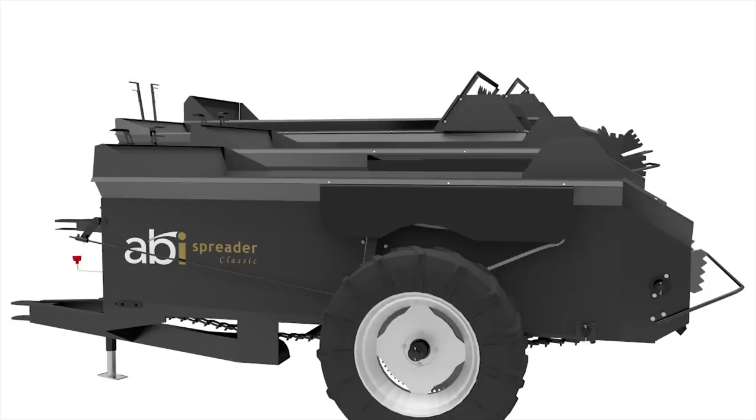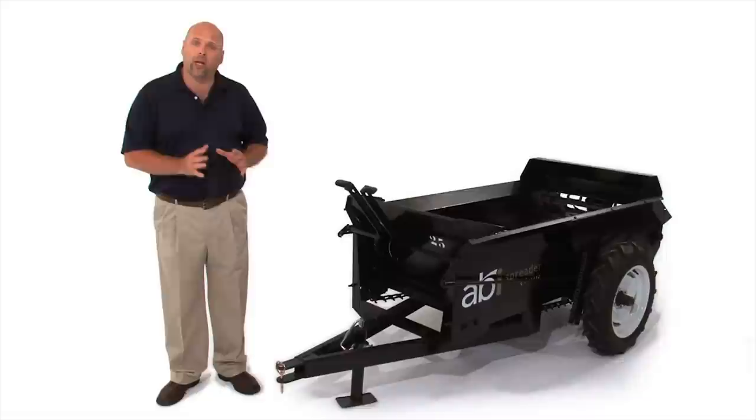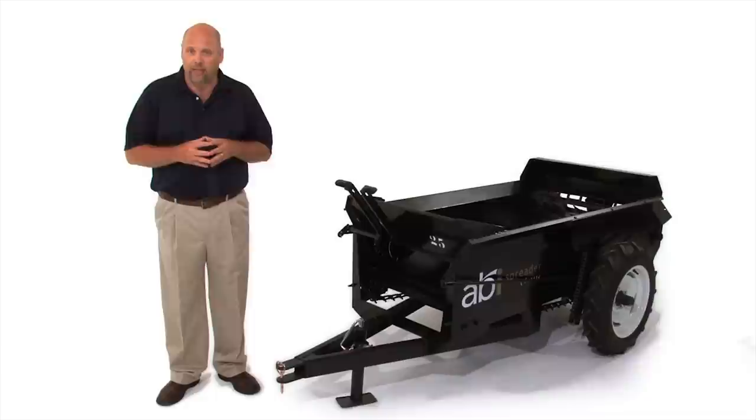The ABI Classic Spreaders come in multiple sizes, everything from a 25 cubic foot to a 130 cubic foot from ground drive to PTO drive. And today we're going to be taking a look at this 25 cubic foot ground drive ABI Classic Spreader.